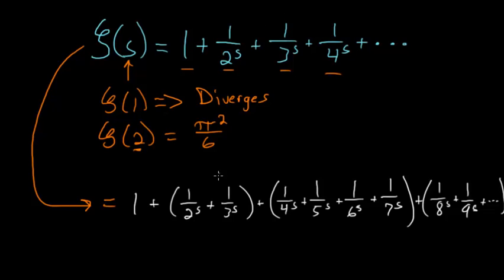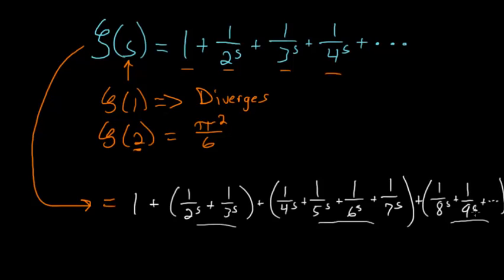Notice that I've grouped terms together here. For this first group, there are two terms. For this set of parentheses, we have four terms. For this one, we would have 8. And from 1 over 16 to the s, all the way to 1 over 31 to the s, we would have another 16. The next grouping would be 32, and that would continue on and on forever.